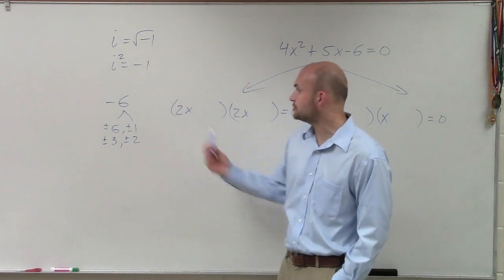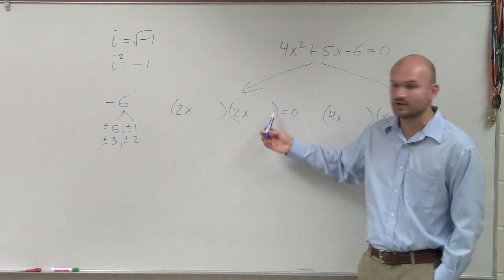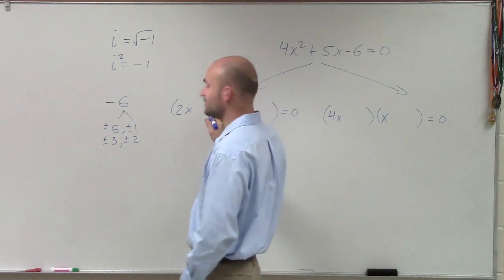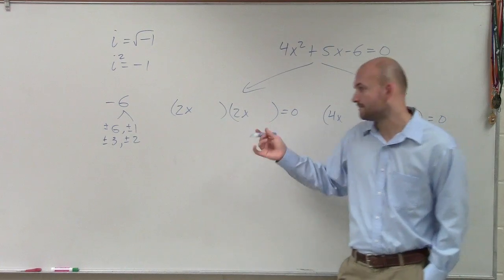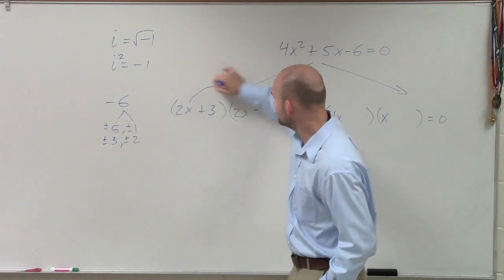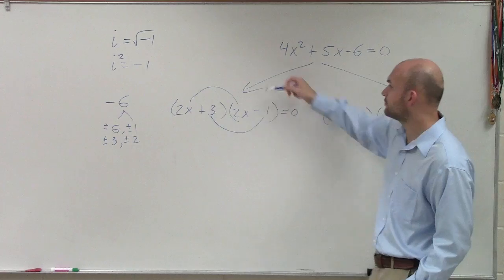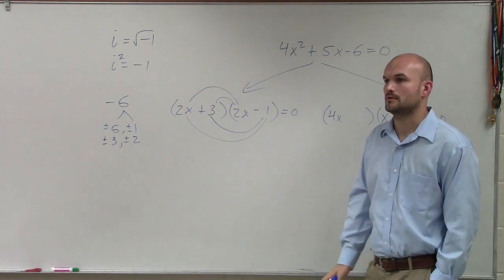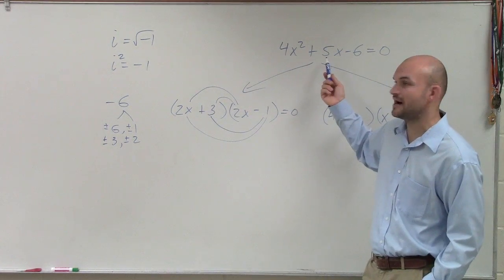Now what we need to do is determine what two values can we put in for there. We could either put positive 3 and negative 1 in for these and figure out. However, if you guys work out by plugging in the numbers for this, does it work for the 2x and the 2x? I end up, when I plug this in, because what I did is I just said, I know that this times this gives me my first term and this times this gives me negative 6. However, when multiplying my outer and my inner, when multiplying the outer and the inner terms, I should add up to 5x.